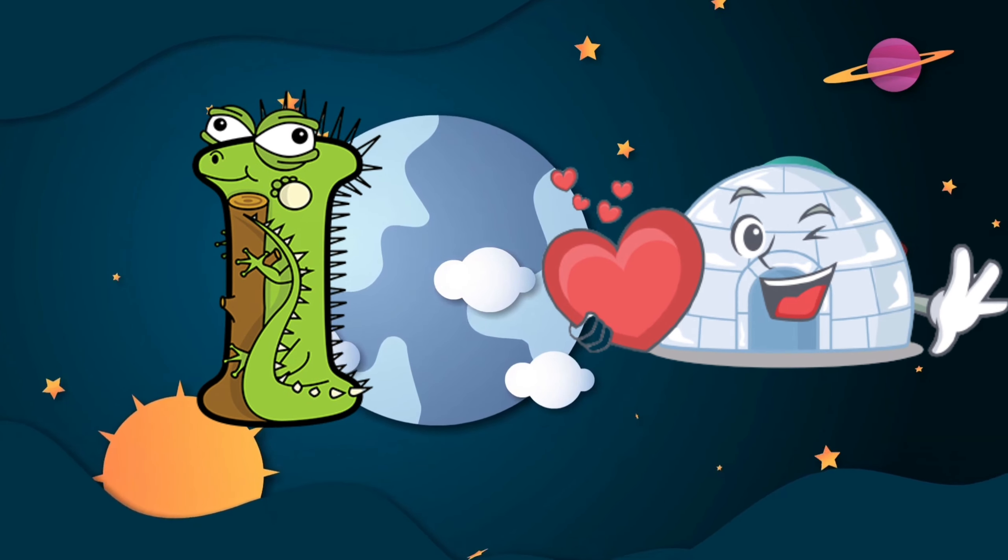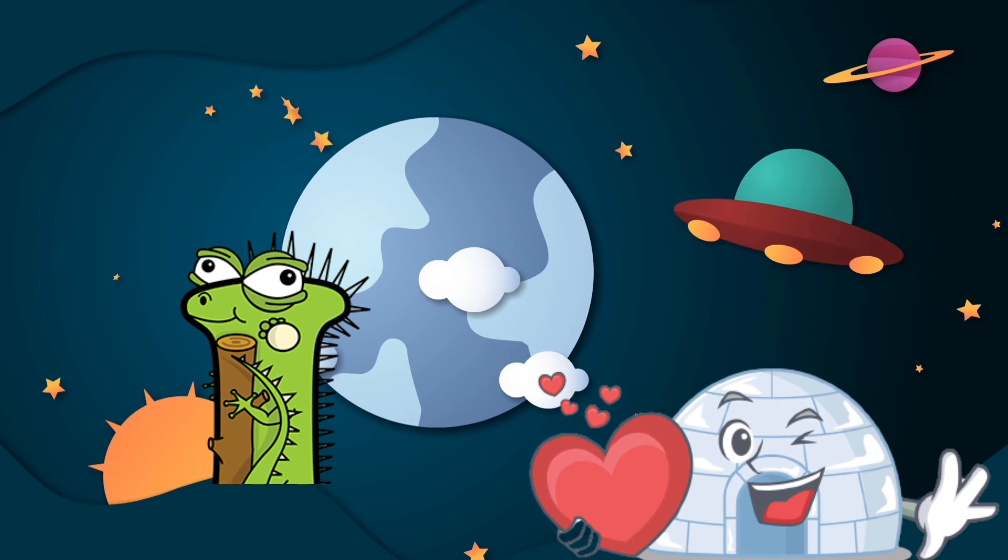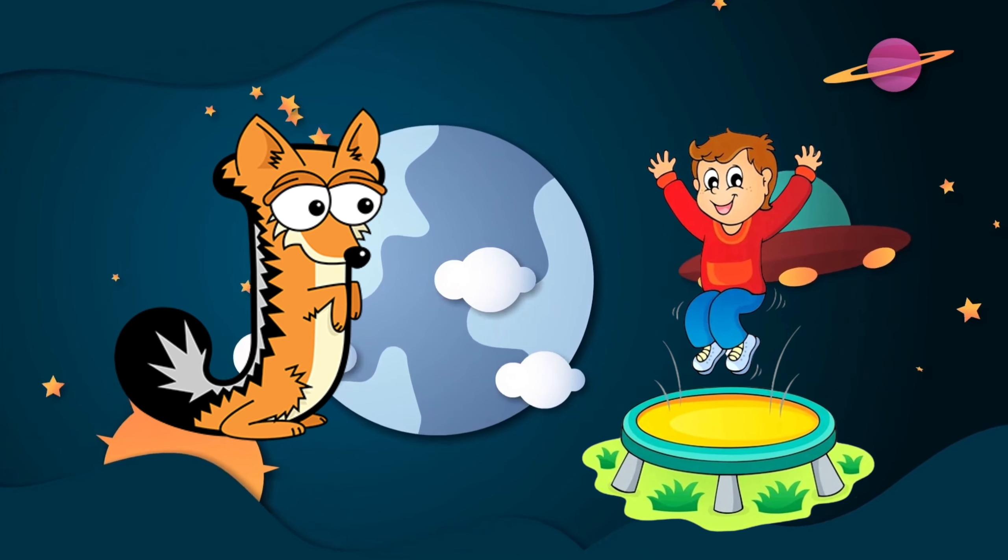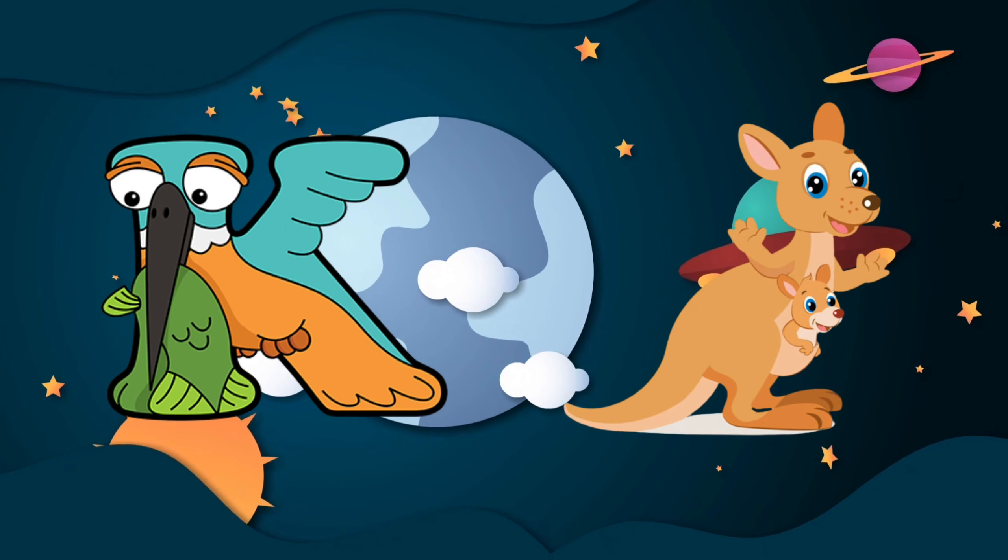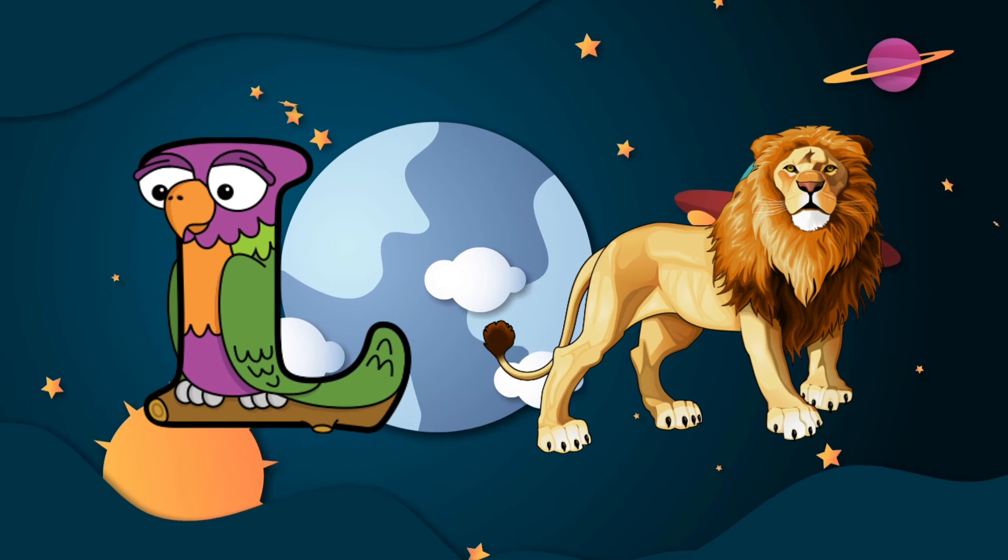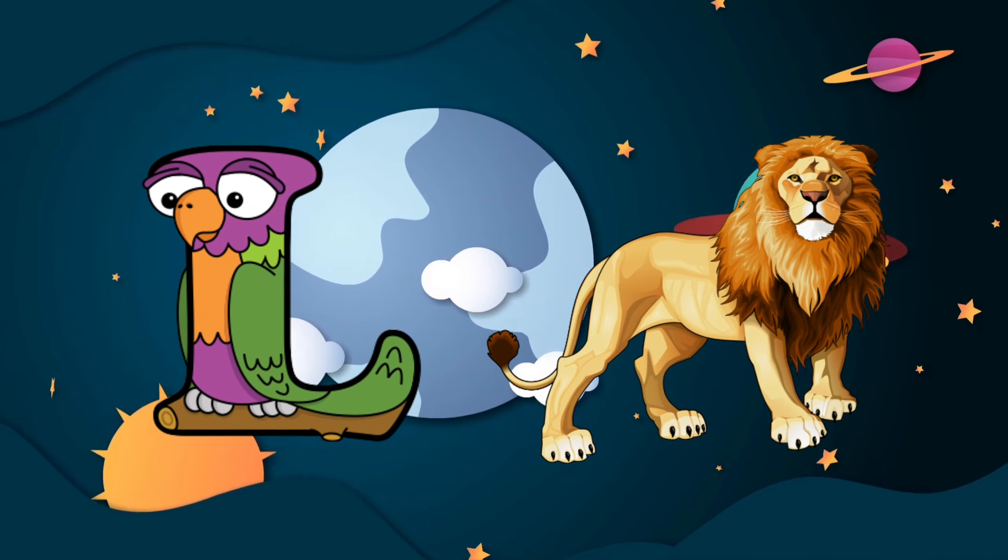I is for igloo, i-i-igloo. J is for jump, j-j-jump. K is for kangaroo, k-k-kangaroo. L is for lion, l-l-lion.